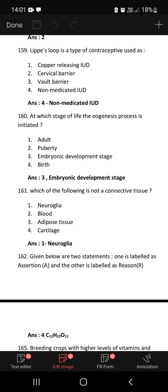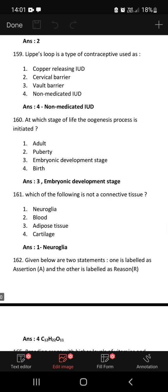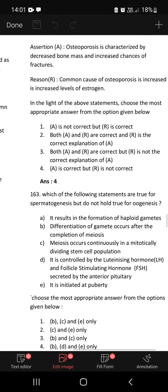Lipid loop is a type of contraceptive used as non-medicated intrauterine device. At which stage of life is the oogenesis process initiated? Embryonic development stage itself. Which of the following is not a connective tissue? Neuroglia is not a connective tissue.